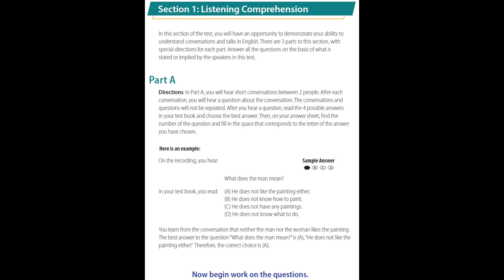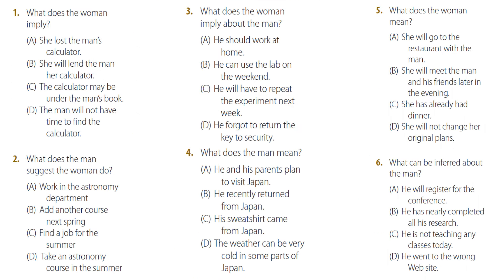Now, we will begin Part A with the first conversation. Number one. 'Have you seen my calculator? It was right here a minute ago.' 'Did you look under your book? I'm always losing things that way.' What does the woman imply?